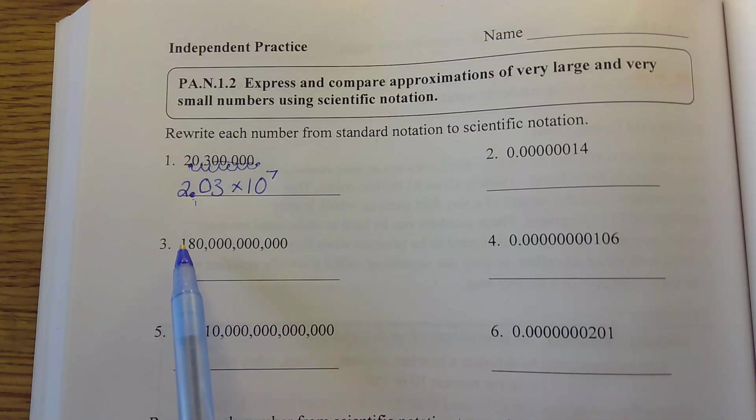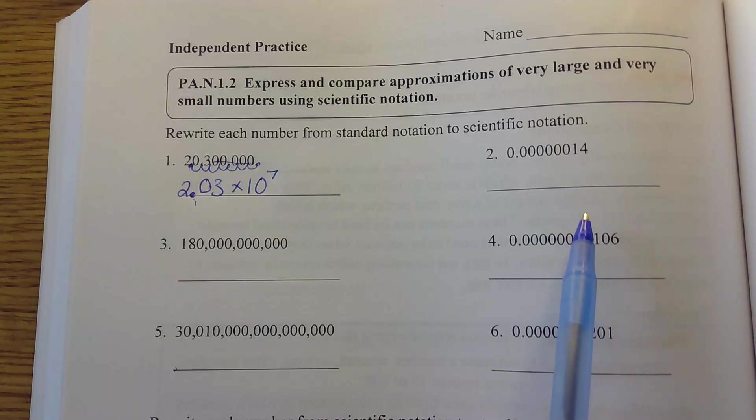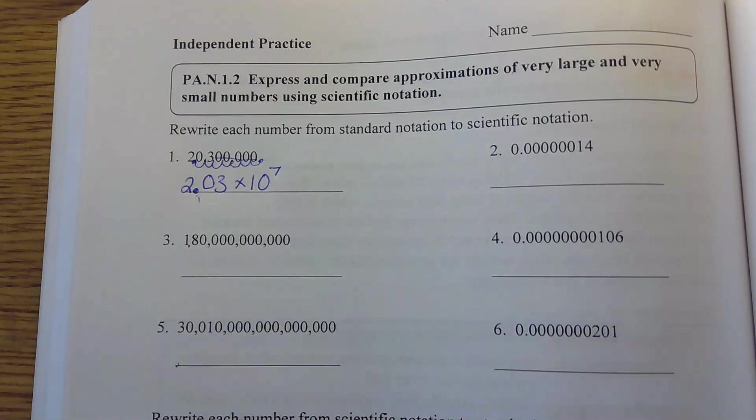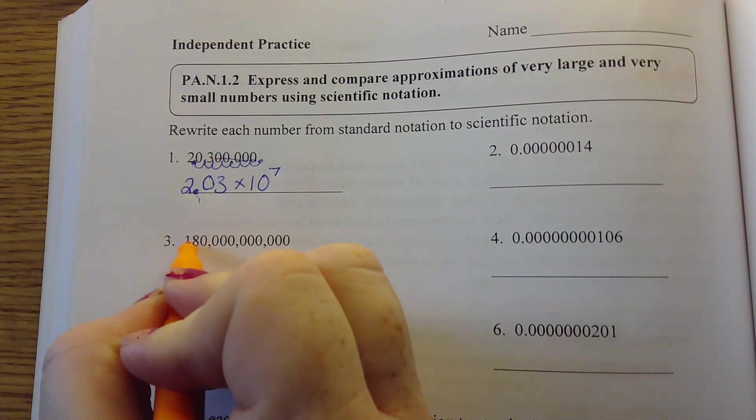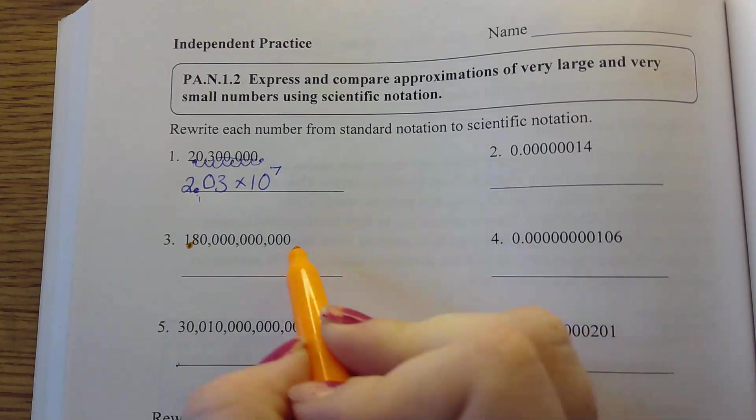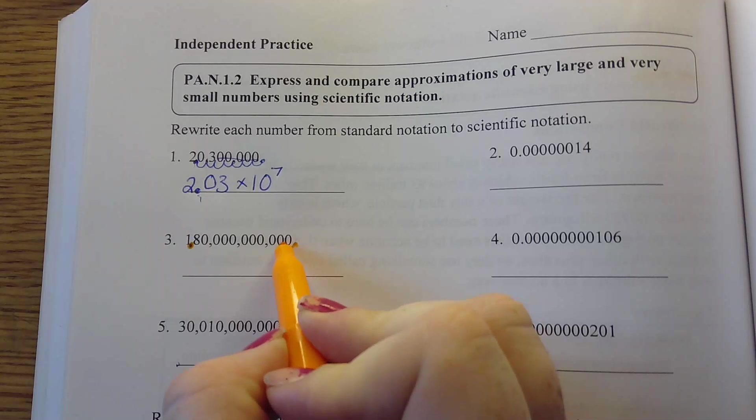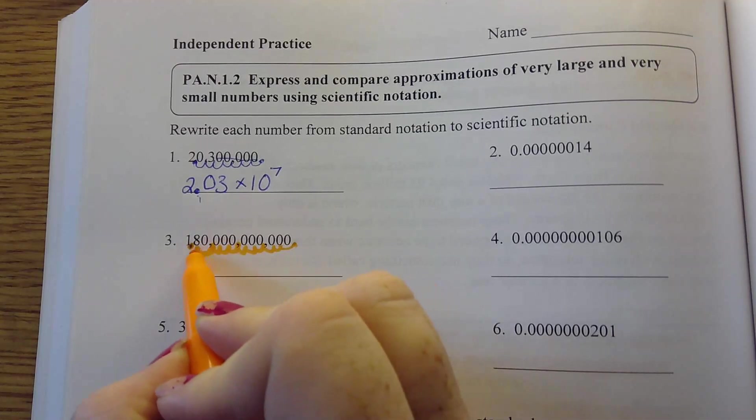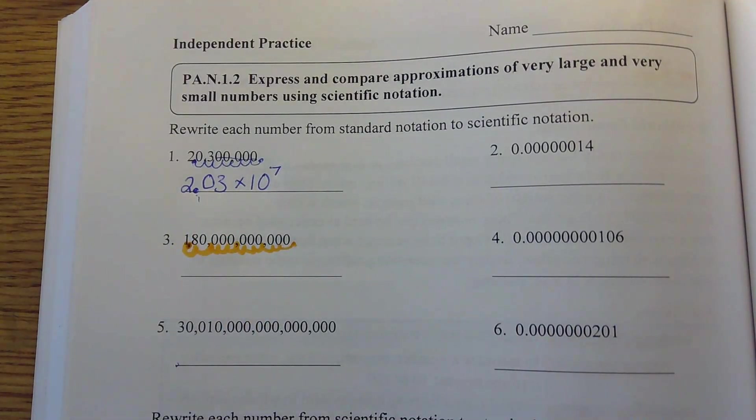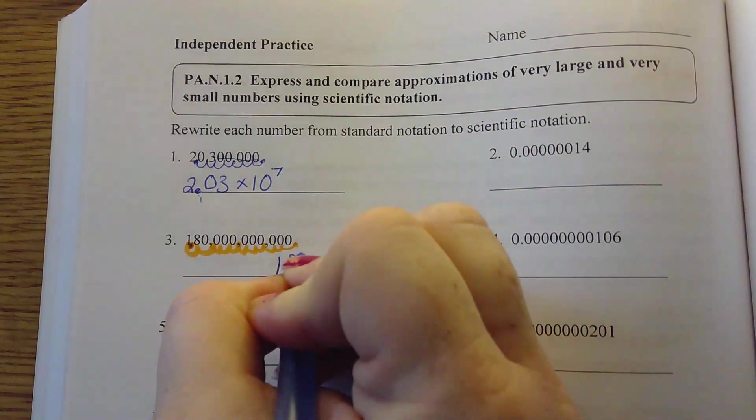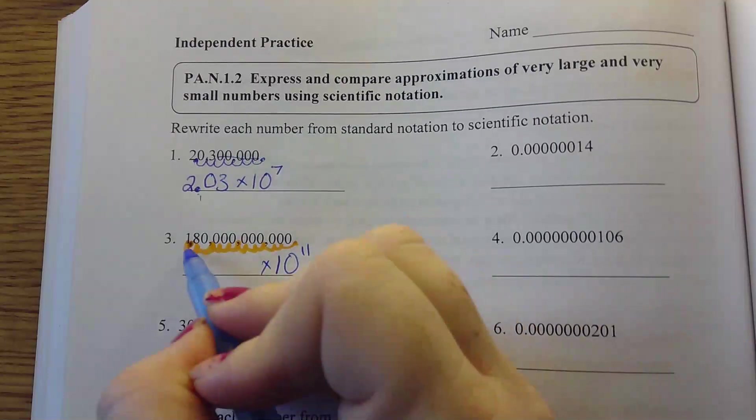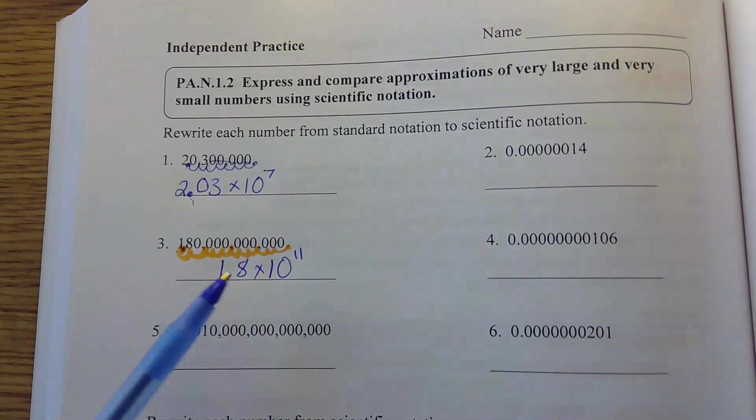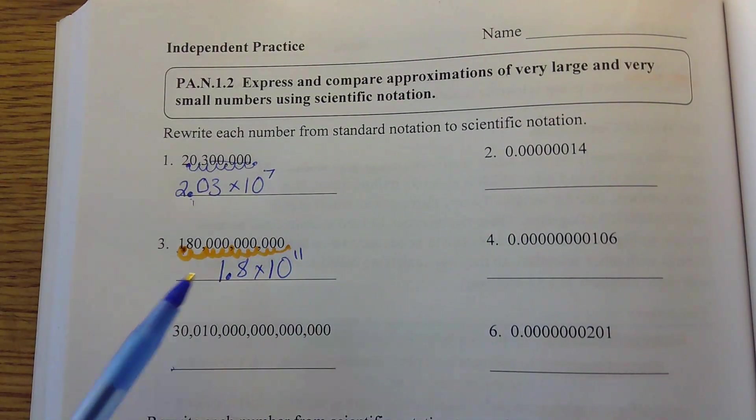So here, let's look at number 3 real quick. Let's do 1, 3, and 5, and then we'll look at 2, 4, and 6. So on number 3, we want our decimal to go right here in between the 1 and the 8. But it's way over here. So we've got to move it 3, 6, 9, 10, 11. So then I'm going to put 10 to the 11th power times, and I've got 1.8 left. You always want one place to the left of your decimal. Okay, that makes sense.